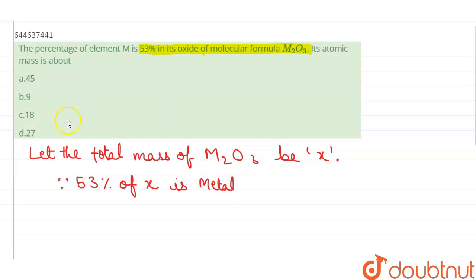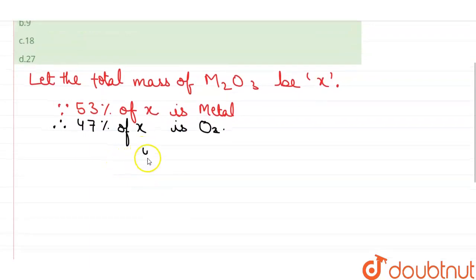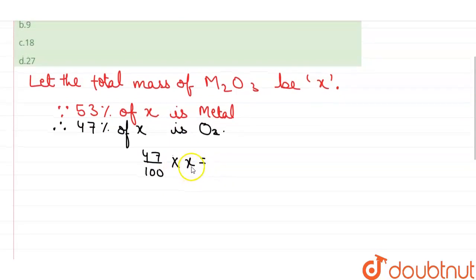so 47 percent of x is O2, that is oxygen. Now, 47 upon 100 into x - this we are using to calculate the total molecular mass of M2O3.